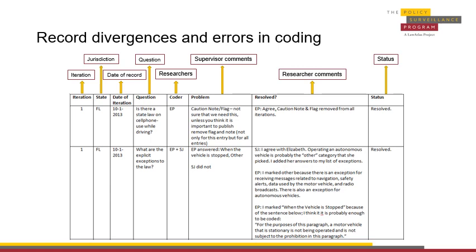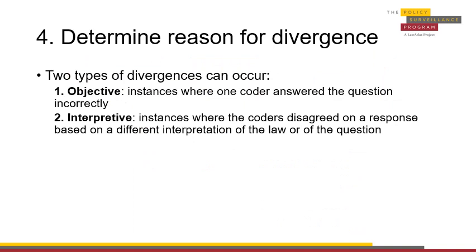Once complete, the coding review sheet is sent to the researchers so that they can address these issues. Once the overall rate of divergence has been calculated, the next step is to classify the errors in the data. Generally, divergences will fall into one of two categories: objective errors or interpretive errors.